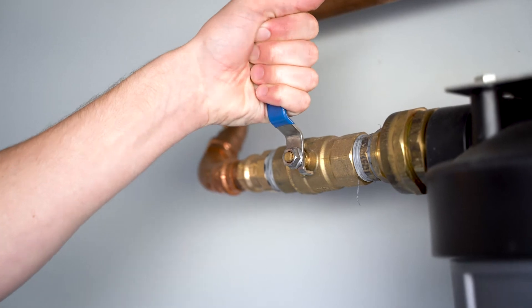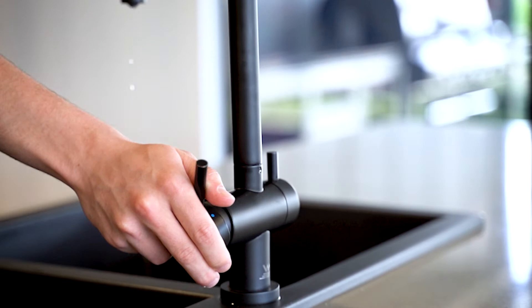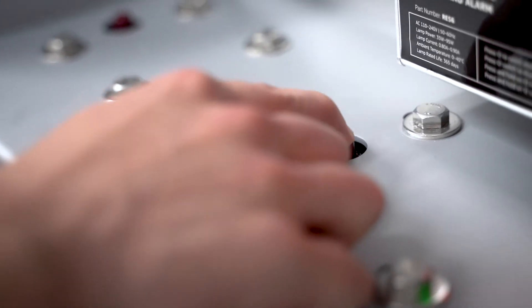To start, turn off the water supply to the system and release the pressure by opening a downstream tap or by pressing one of the red pressure relief buttons as shown.